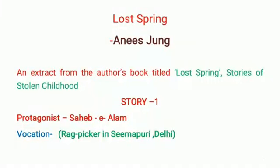Hello students. In our last class we started with 'Lost Spring', written by Anees Jung. In your syllabus there are two stories from this book. The first story is about Sahib Alam, a rag picker from Dhaka, Bangladesh, whose family migrated to India after their agricultural field was destroyed in a natural calamity. Despite residing in India for many years, they could not upgrade themselves. Finally he had to work in a tea stall where he was paid 800 rupees and all his meals.